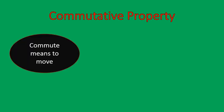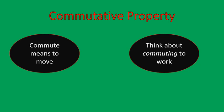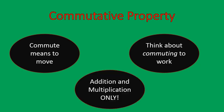The commutative property. I think about this as commuting means to move. So if you're moving something — like your dad or your mom might commute to work, they might take the train or the bus, or they might drive a car — they're moving from one place to another. That's a way to remember the commutative property. It can only be used with addition and multiplication. That's very important, and I'll show you some examples of those.